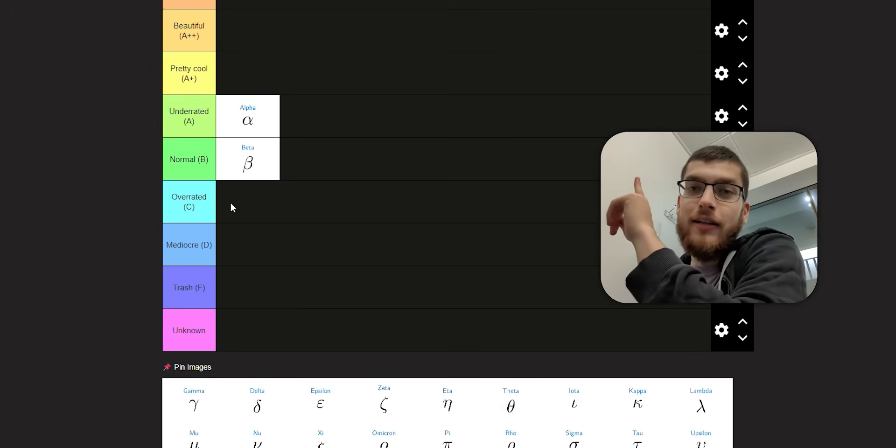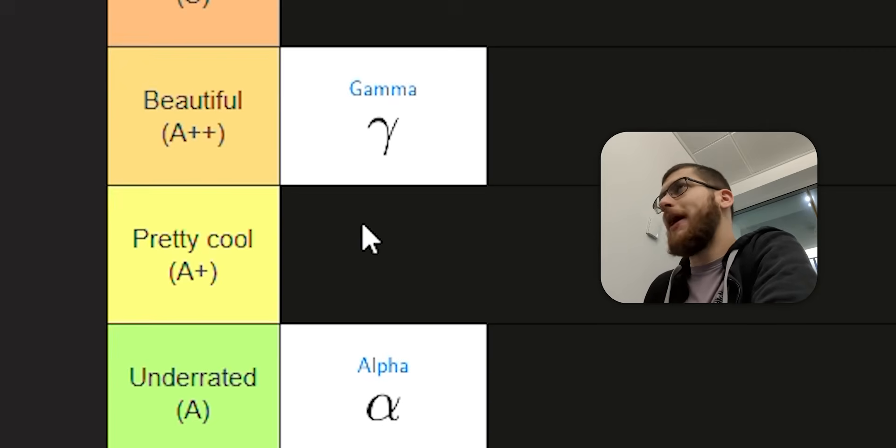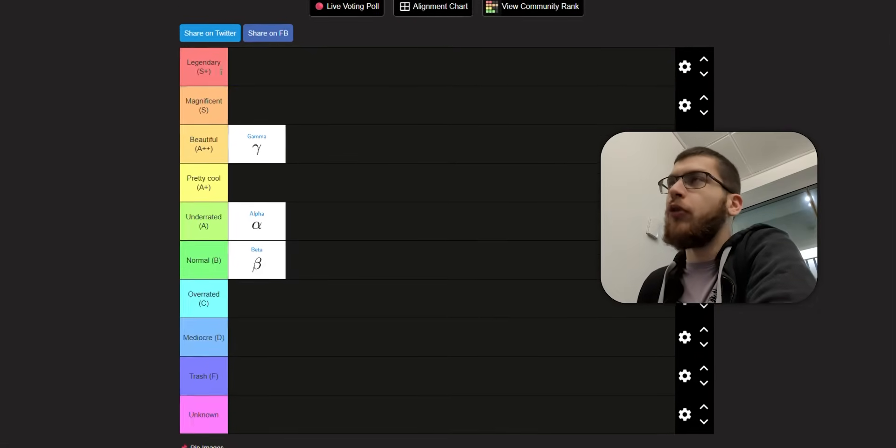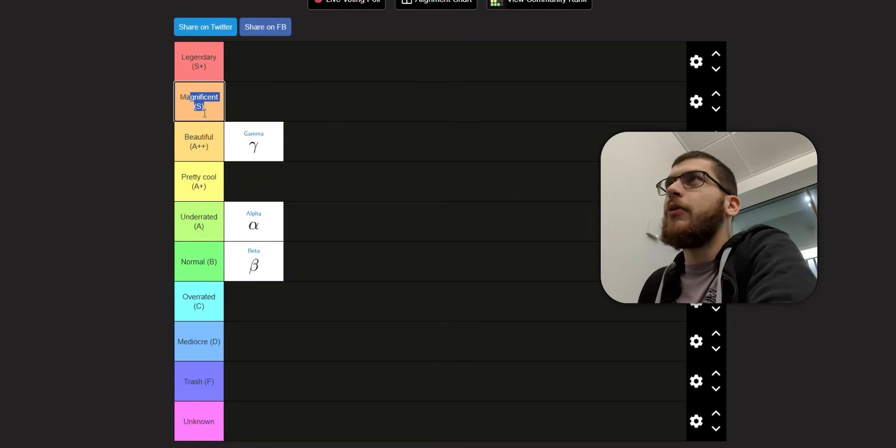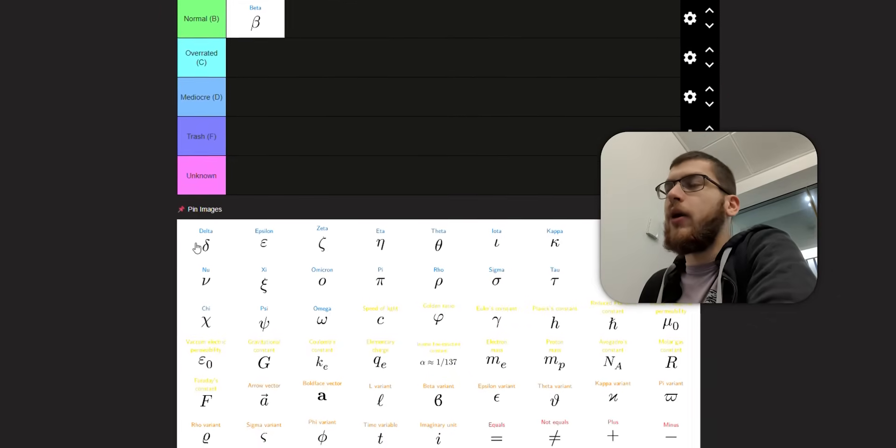Gamma, now I think this is a very beautiful symbol. I love writing the symbol gamma. It can be written in one stroke, and also Euler-Mascheroni constant uses gamma, so it's automatically got to be A++, beautiful.